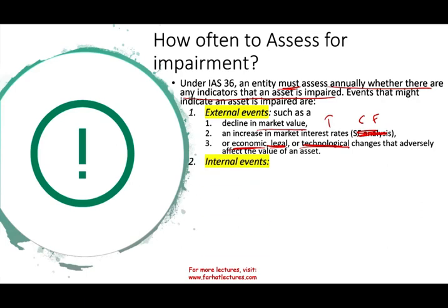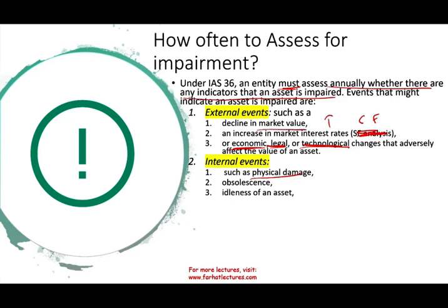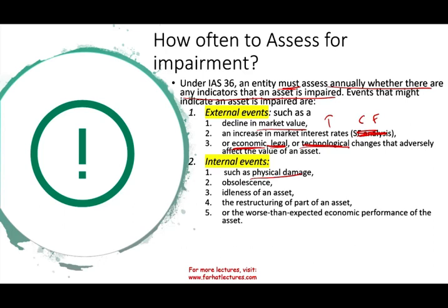There are also internal events to look at, such as physical damage — an accident that damages the asset. Obsolescence: the asset is physically fine but from a production perspective less useful, especially with technology — for example, you bought software that still works but a faster, better version exists. Idleness: if you're not using an asset as much as you should, ask yourself if it's impaired. Restructuring an asset for a different purpose, or worse-than-expected economic performance — you assumed it would produce one million units but the maximum is 600,000.